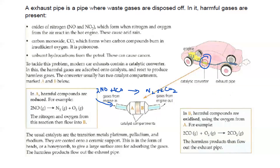This makes the output less harmful compared to carbon monoxide and oxides of nitrogen, which are more harmful. Inside the catalytic converter, oxides of nitrogen and carbon monoxide combine and produce the less harmful gases nitrogen and carbon dioxide. This is how the catalytic converter in a car works.